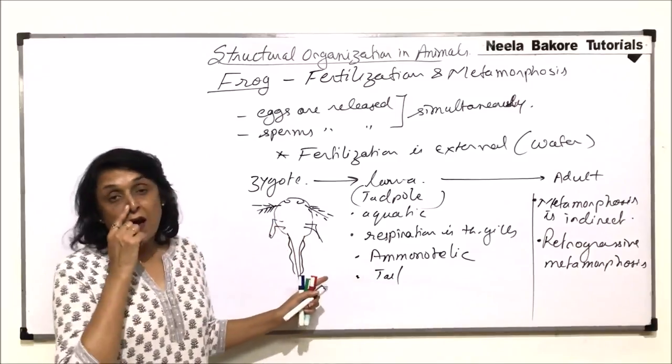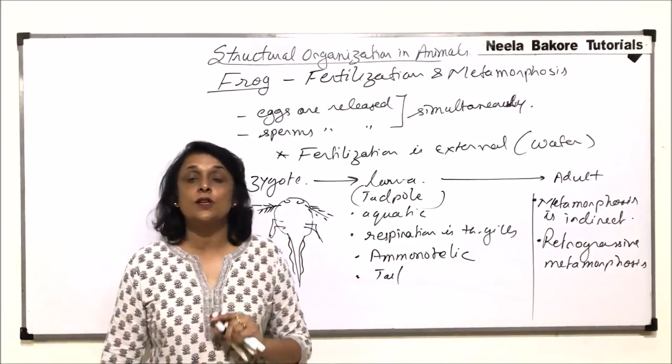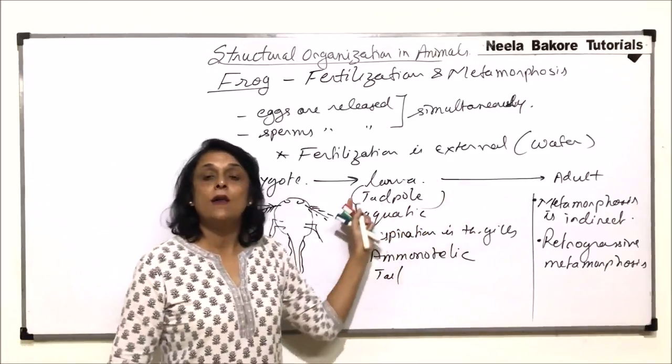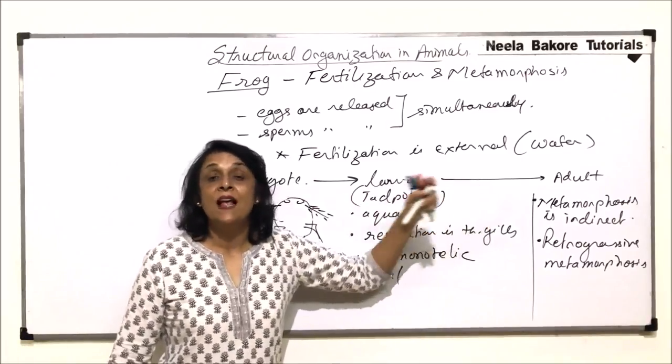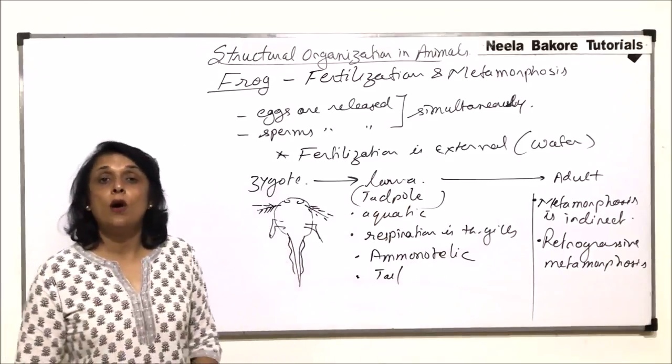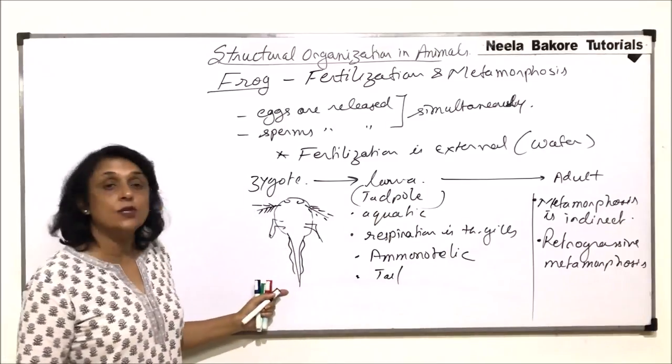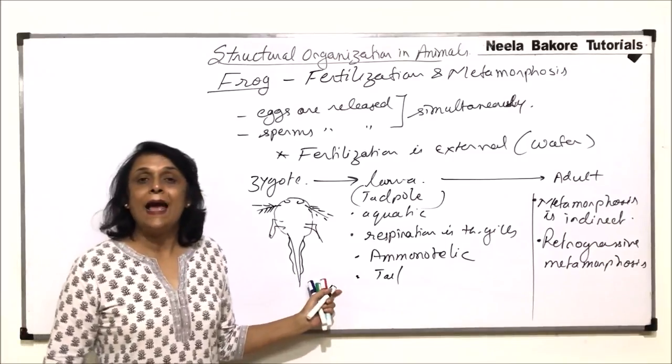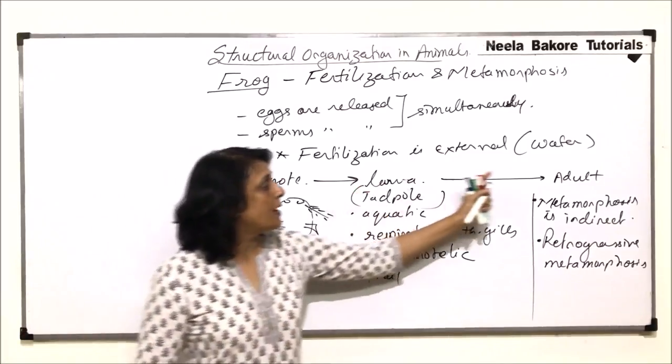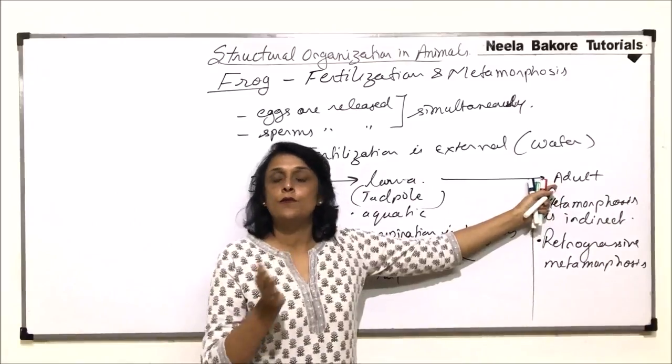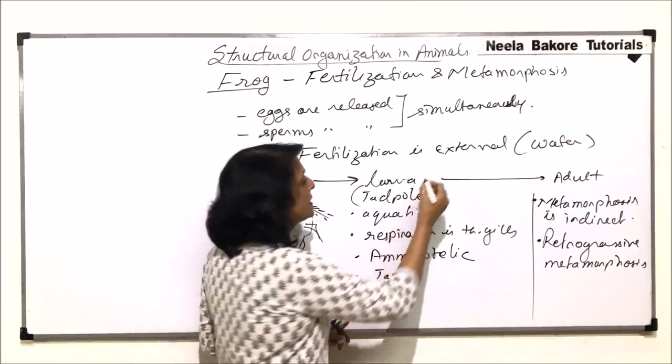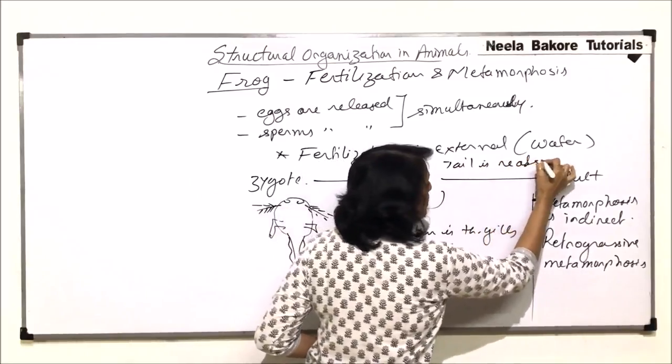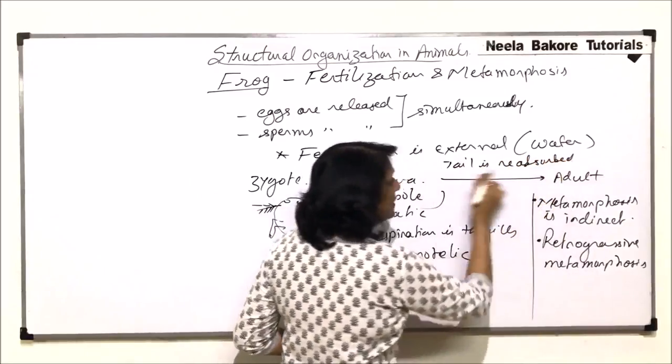But in case of frogs, a complex functional structure is formed. But as development takes place or as metamorphosis takes place, that structure is lost or reabsorbed. And the structure is tail. So tadpoles have tail. And as from larva, adult metamorphosis or changes are taking place, during this time, the tail is reabsorbed.